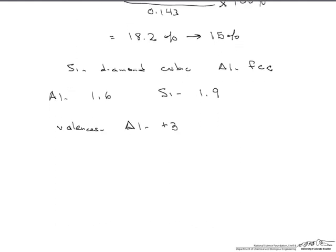Finally, let's look at the valences. Aluminum has a plus 3 charge, silicon has a plus 4. All of these rules are pretty much broken, and therefore, aluminum and silicon are only partially soluble.